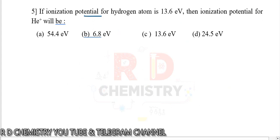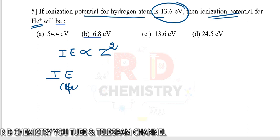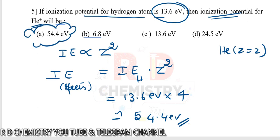Question number 5. If the ionization potential of hydrogen is 13.6 eV, what is the ionization potential of He⁺ (a hydrogen-like species)? Ionization energy of any hydrogen-like species = ionization energy of hydrogen × Z². For helium, Z=2, so Z²=4. Therefore IE = 13.6 × 4 = 54.4 electron volts. The answer is option A.